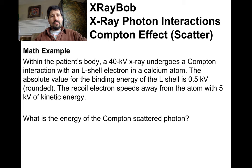Let's do some math. Within a body, we've got a 40 kV x-ray that goes through a Compton interaction with an L-shell electron of calcium. The binding energy for the L-shell of calcium is 0.5 kV, and the recoil electron speeds away with 5 kV. So what's the energy of the Compton scattered photon? Using our formula: 40 kV in, minus 0.5 kV binding energy, minus 5 kV kinetic energy of the electron, gives us 34.5 kV as the energy of our scattered photon.